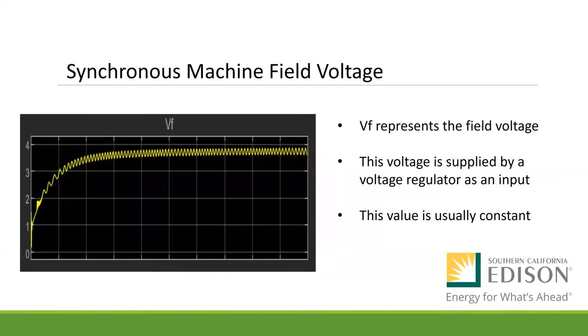Now we have the synchronous machine field voltage. The graph on the left shows the field voltage input. The voltage is applied by a voltage regulator and is usually constant. By keeping this value constant, we can keep a constant power delivery, which becomes really important when dealing with different kinds of customers where their electrical needs are different.